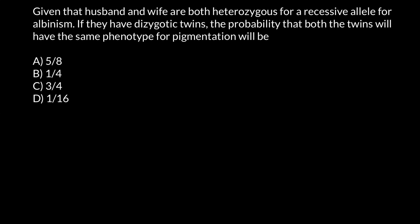Hello, and welcome to Nikolai's Genetics Lessons. Today I got a question from one of my subscribers, and here is the problem: given that the husband and wife are both heterozygous for the recessive allele for albinism, if they have dizygotic twins, what is the probability that both twins will be of the same phenotype for pigmentation?